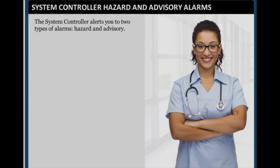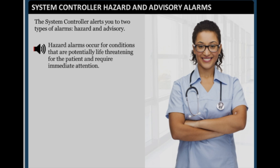The system controller issues two types of alarms: hazard and advisory. Hazard alarms occur for conditions that are potentially life-threatening for the patient and require immediate attention. Advisory alarms are important but not life-threatening. When an alarm occurs, messages appear on the system controller user interface screen to help resolve the problem. These screen messages indicate the alarm type and the action required to resolve the alarm.